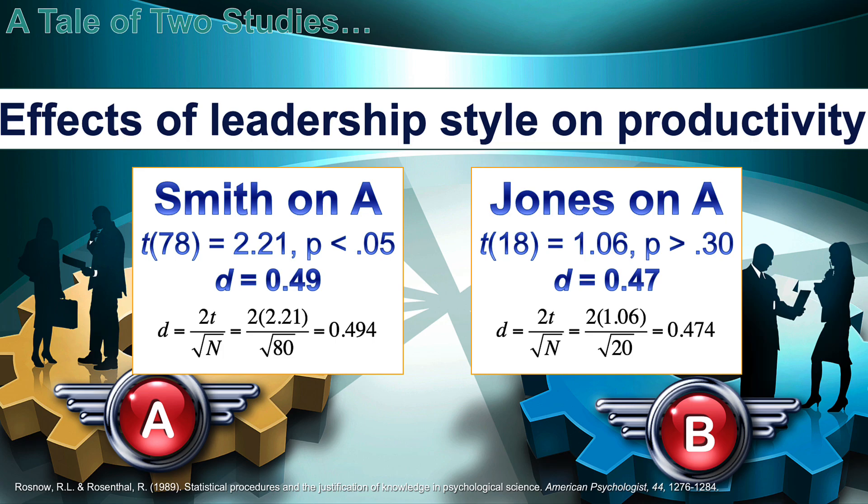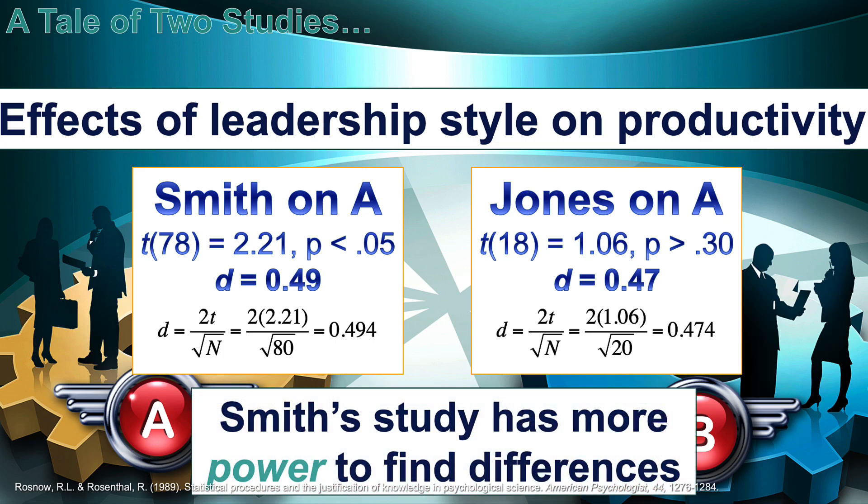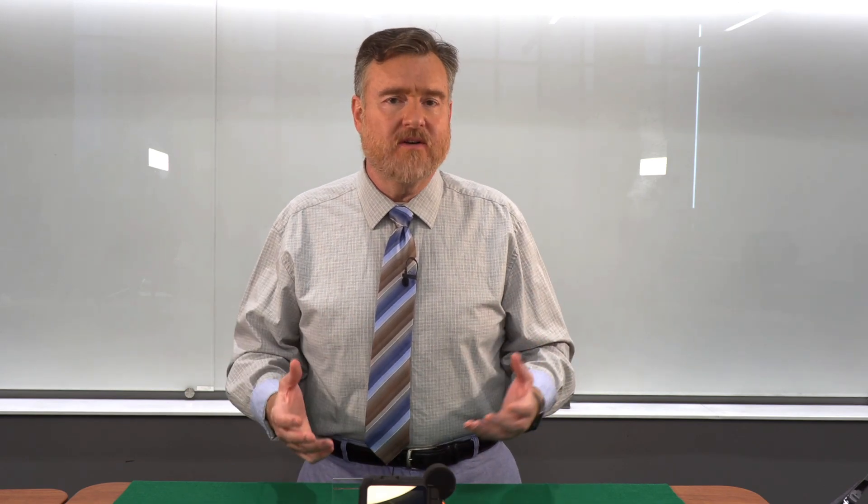But why is one significant and the other not? The answer is sample size. Smith's study has more power to find significant differences because his sample size is larger — the 78 degrees of freedom tell us that he has 80 participants in his study. Whereas Jones only had 20 participants, giving us 18 degrees of freedom. Jones only had 10 people in two groups; this is an underpowered study, so it's no wonder it was non-significant.